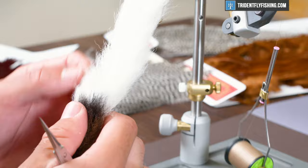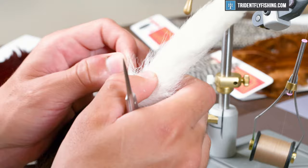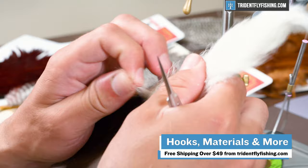From the tail, we're going to move right into the wing. We're using calf tail for the wing. This is a nice one here. You could use calf body as well, but I like the tail better. It has a nice crinkled effect to it. All the materials that we're using today can be found at tridentflyfishing.com. Orders over 49 bucks do ship for free.